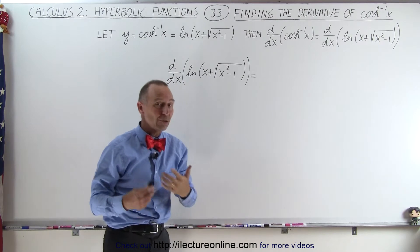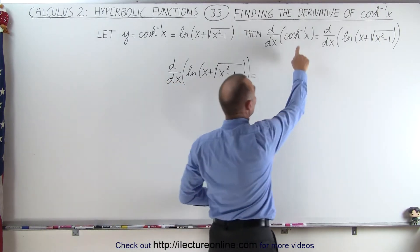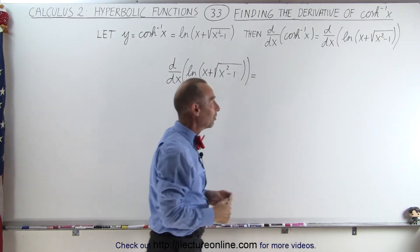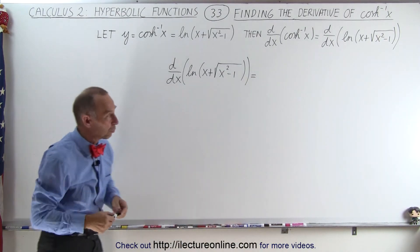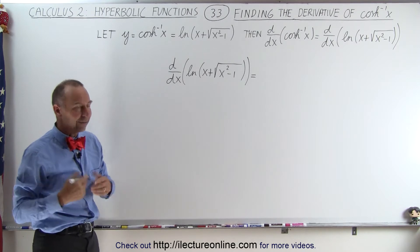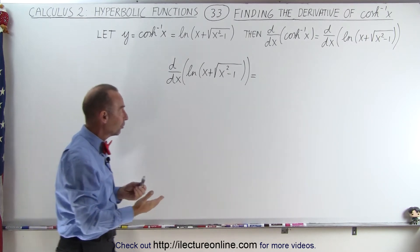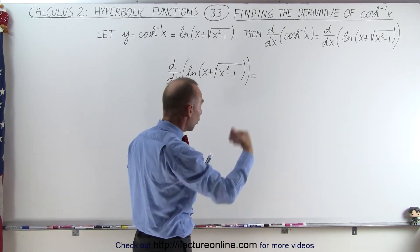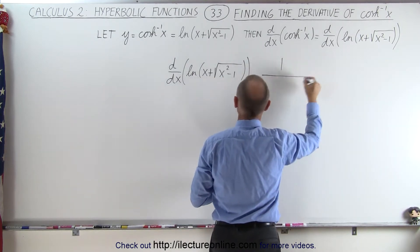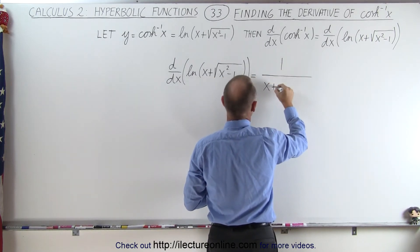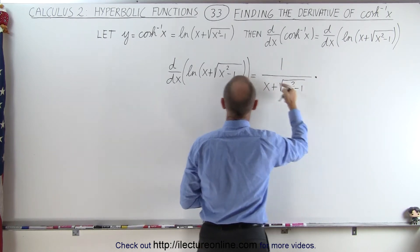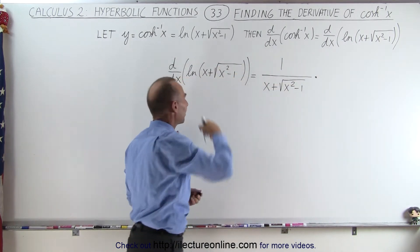Taking the derivative of the inverse hyperbolic cosine is the same as taking the derivative of that expression — the natural log of x plus the square root of x squared minus 1. The derivative of a natural log is 1 over that, so this becomes 1 divided by x plus the square root of x squared minus 1, times the derivative of that expression.